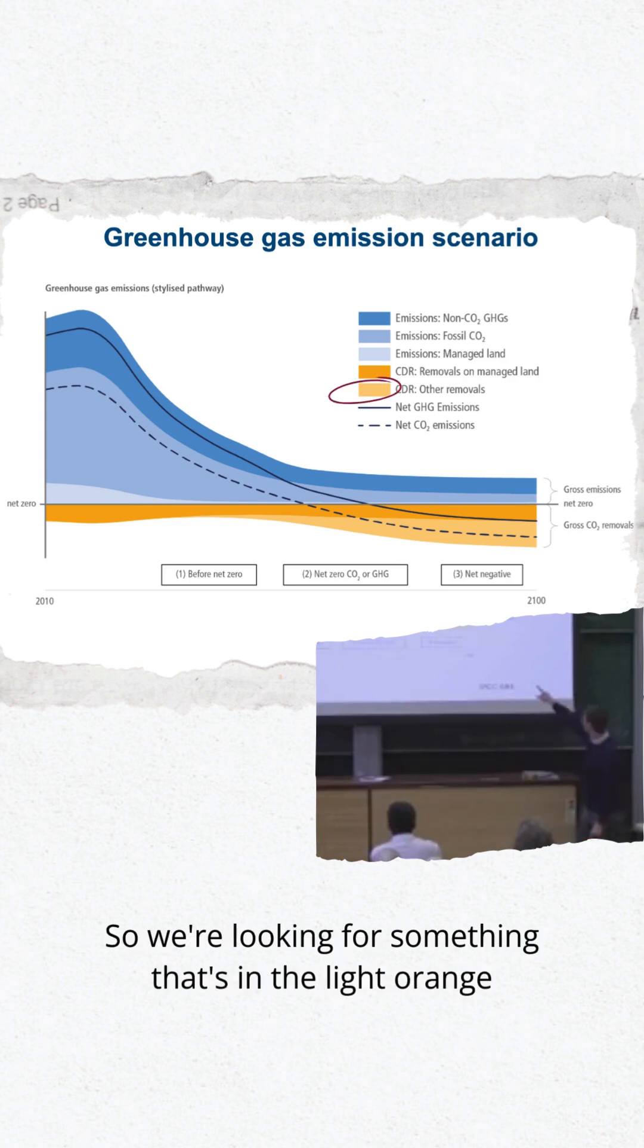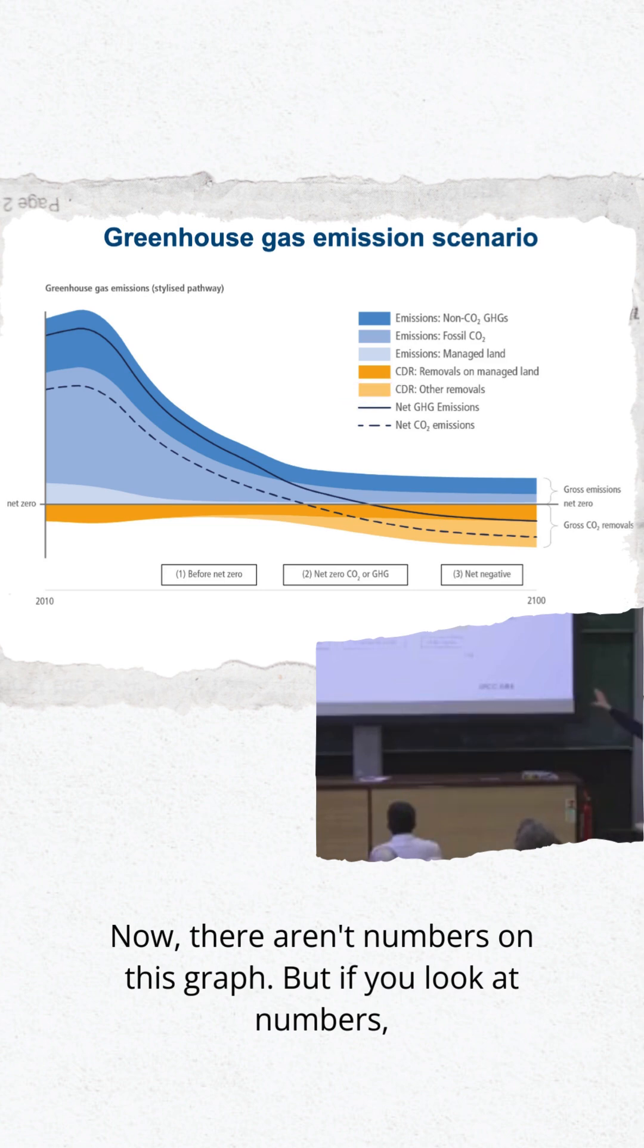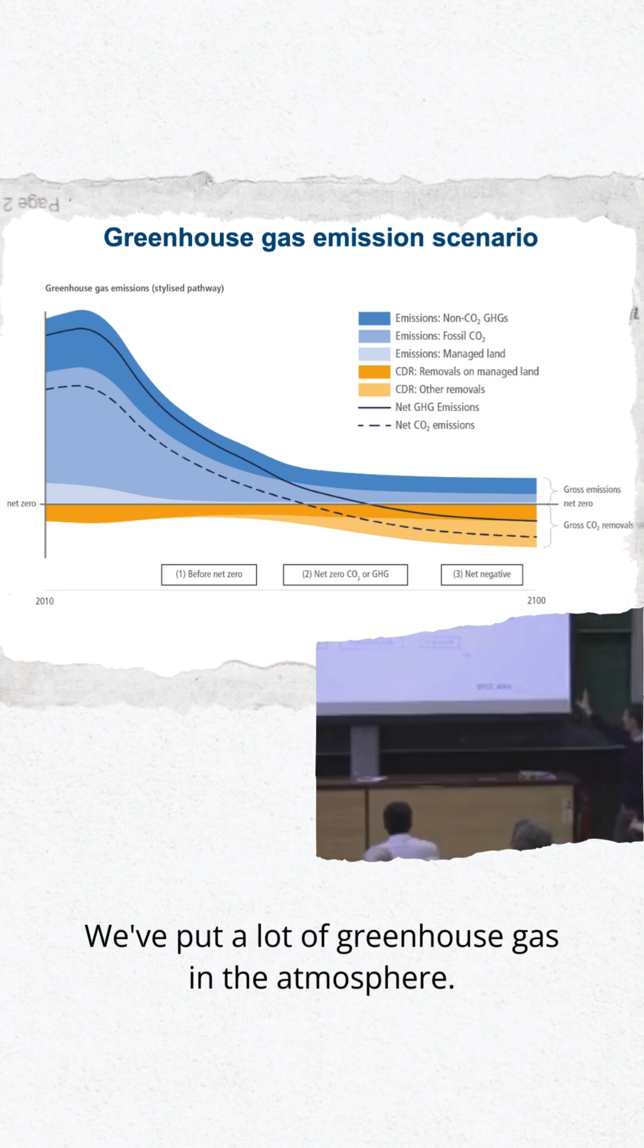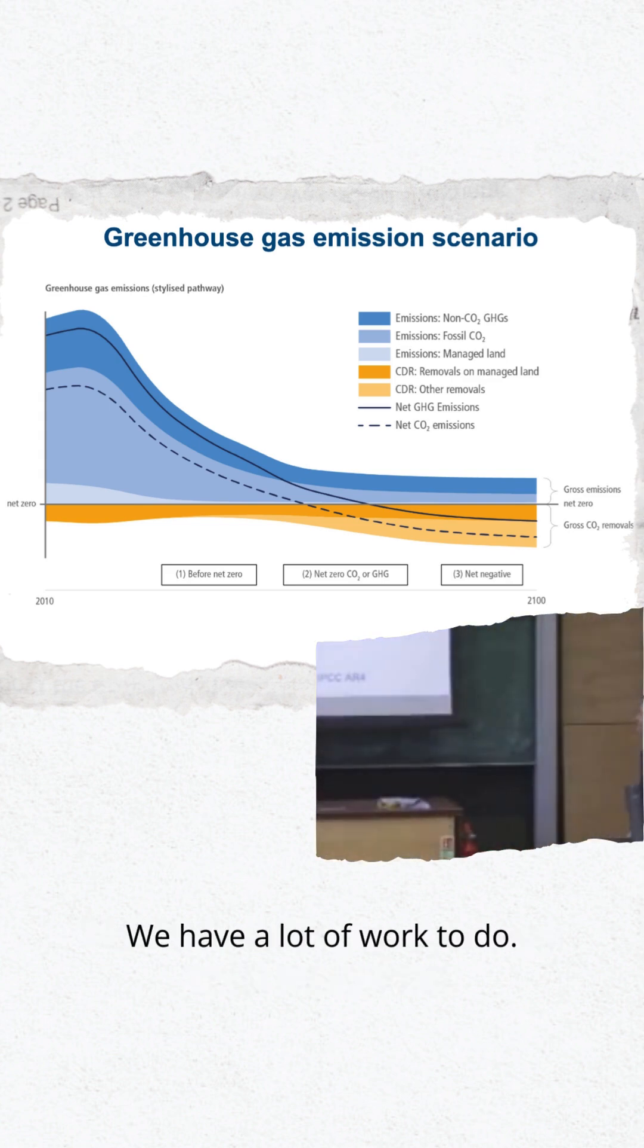We're looking for something that's in the light orange to do that. Now, there aren't numbers on this graph, but if you look at numbers, you realize that is a huge lift. We have to remove a lot. We've put a lot of greenhouse gases in the atmosphere. We have a lot of work to do.